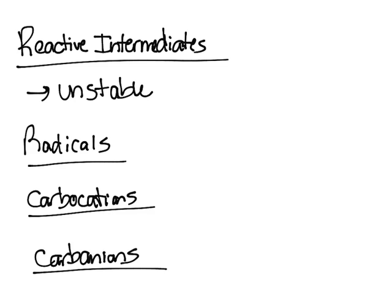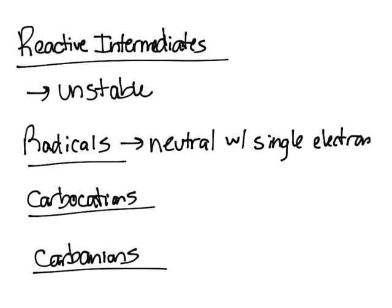First, let's just define them. Radicals are neutral with a single electron. An example would be C-H-H-H with a radical.